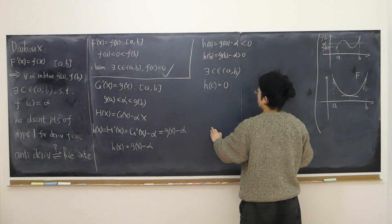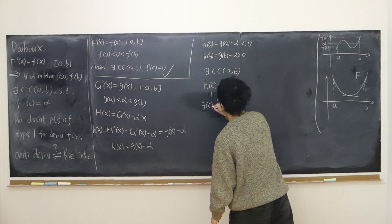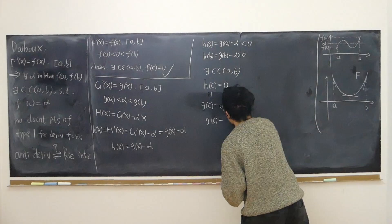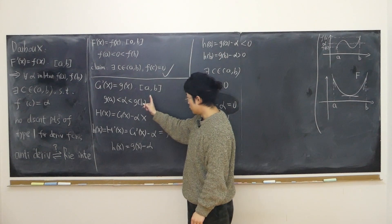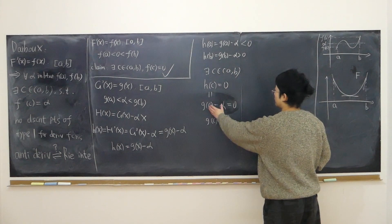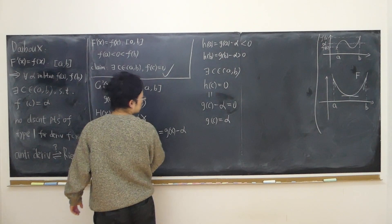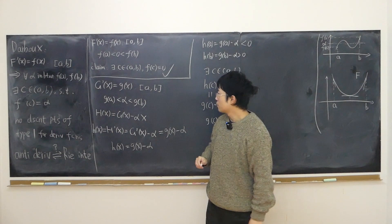What is little h(c)? It equals little g(c) − α. Setting little g(c) − α = 0 gives little g(c) = α. So, if little g(x) is a derivative function over the closed interval and we take any constant alpha in between g(a) and g(b), there exists some c such that g(c) = α. I've proven the general case, just using different notation.